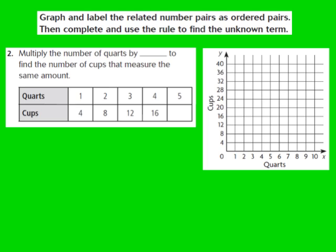Now let's take a look at question number two together. It says to graph and label the related number pairs as ordered pairs. Then complete and use the rule to find the unknown term. For question two, the rule says: multiply the number of quarts by blank. So we're going to have to complete the rule to find the number of cups that measure the same amount. Looking at the table, the first row represents quarts — 1, 2, 3, 4, 5 — and the second row represents cups — 4, 8, 12, and 16. I'm going to write the number pairs as ordered pairs.